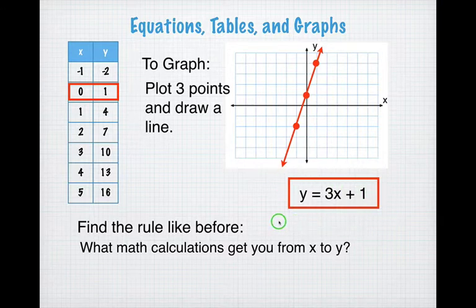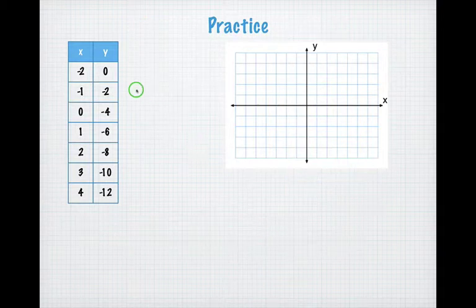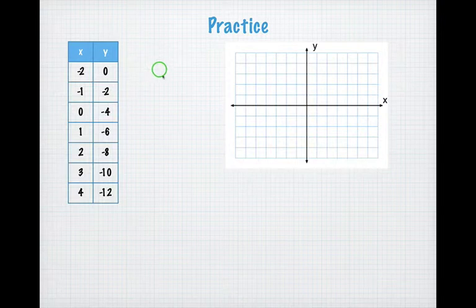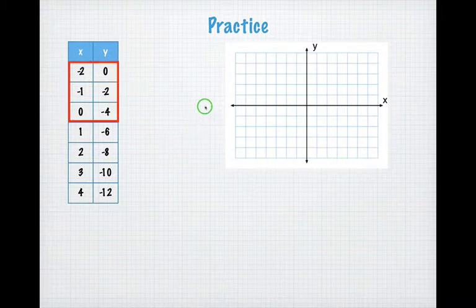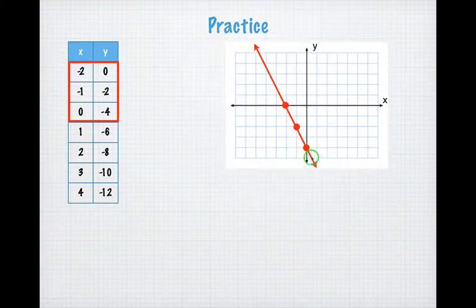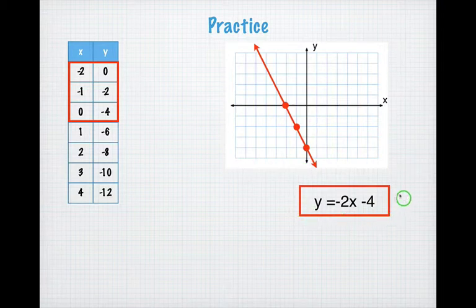Once you guys have this written down, we're going to move on to a practice problem. Here's the practice problem. The sub should pause the video and give them about 3 to 4 minutes to write down the table, draw a line, and figure out the rule. So you guys should have got this answer — you should have been able to plot these three points, your graph should look like that, and your equation rule is y equals negative 2x minus 4.